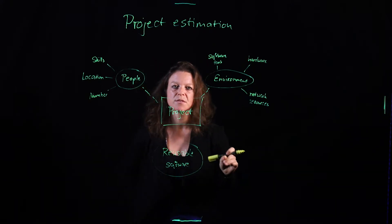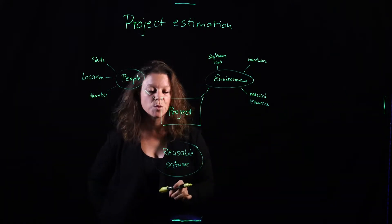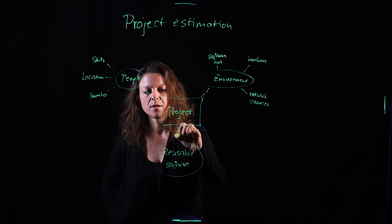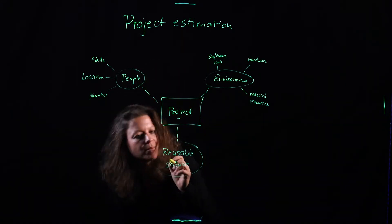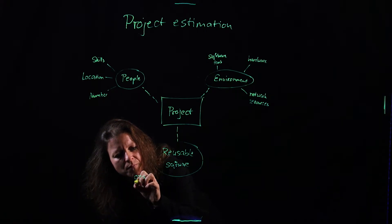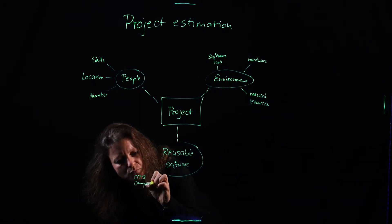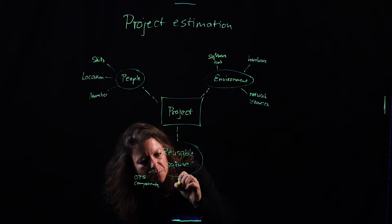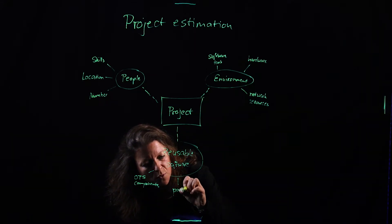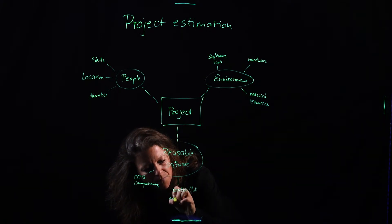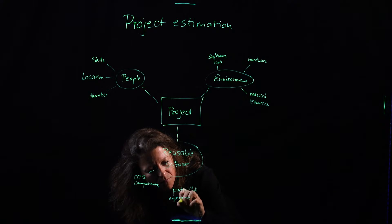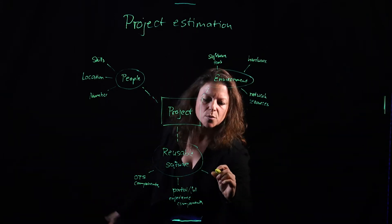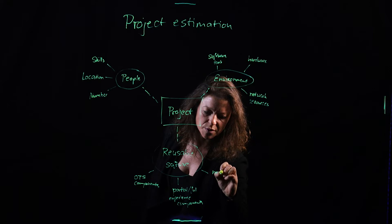And then the third part, reusable software, we don't want to start from scratch. We don't want to reinvent the wheel any time we start a new project. So maybe there are some libraries that we can use. Maybe there are some off-the-shelf components that we may be able to use and maybe adapt. So we may have some partial or full experience components. And then of course, or most likely, there will be some new components that we have to develop.